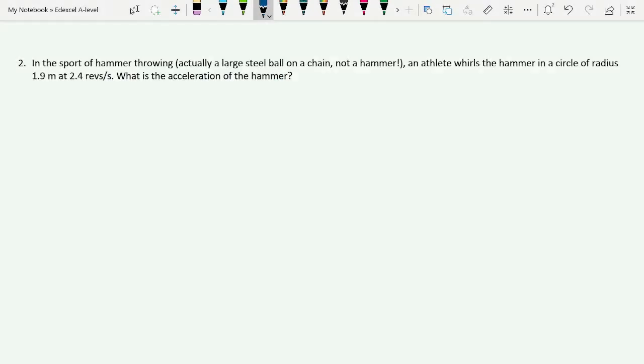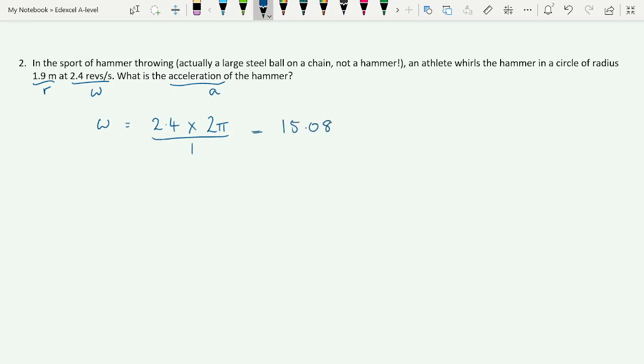Question 2. In the sport of hammer throwing, which is not actually a DIY hammer, it's a great big steel ball on a chain that the athlete whirls around. They whirl it in a circle of radius 1.9 meters at 2.4 revolutions per second. Now obviously that is not the standard unit for angular velocity, we're going to have to change that. But we want acceleration. So let's first of all turn this 2.4 revolutions per second into radians per second. So we know that omega is the revolutions per second times 2 pi.